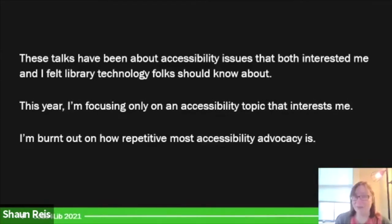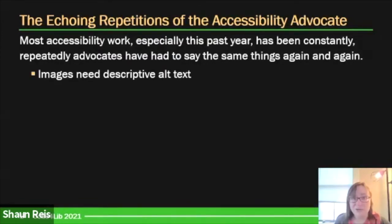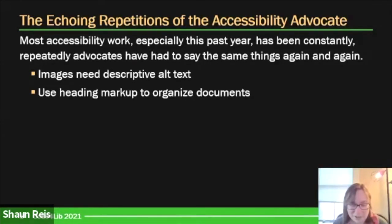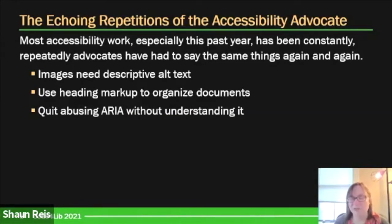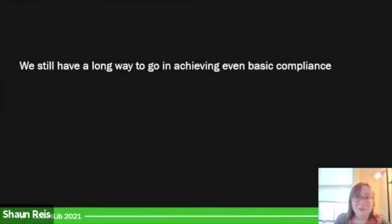I'm getting pretty burnt out on accessibility advocacy, and I'm not alone in this. This past year has been great in terms of more people realizing the importance of accessibility, particularly due to the increased virtual interactions we've been going through. But the problem is we're seeing the same things we've always had to say as accessibility advocates: use descriptive alt text in your images, start using headings to mark up your document, don't mess around with ARIA unless you understand what's going on.